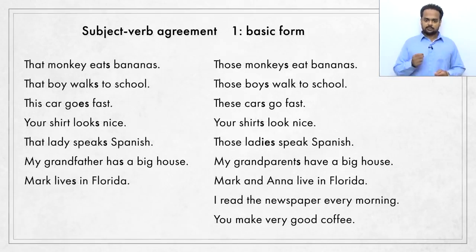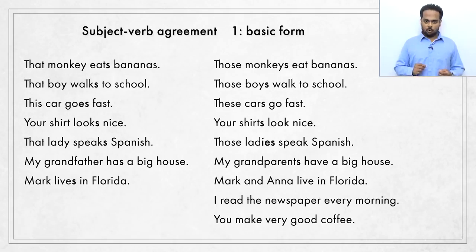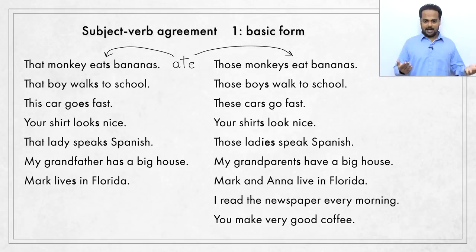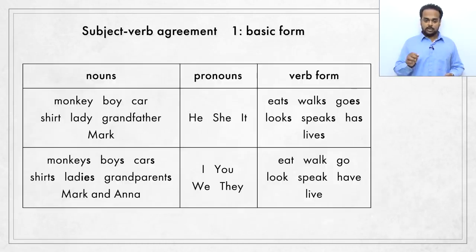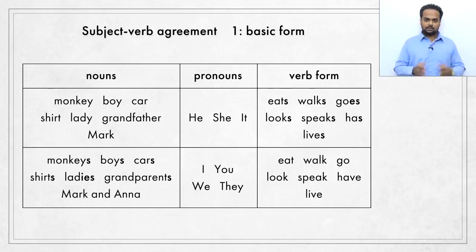Subject-verb agreement rules only apply to the present tense. In the past tense, it isn't a problem because there's only one past tense verb form. The past tense of 'eat' is 'ate,' so we say 'that monkey ate bananas' and 'those monkeys ate bananas' — the same for both singular and plural subjects. Similarly, 'that boy walked to school' and 'those boys walked to school.' In the other sentences we would say went, looked, spoke, had, lived, and made. The basic subject-verb agreement rule only applies in the present tense: add S to the verb for a singular subject, and use the base form without S for a plural subject. This rule works for all verbs — walk, go, look, speak, have, live, do, talk, play, etc.